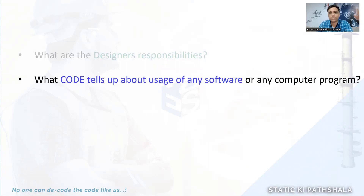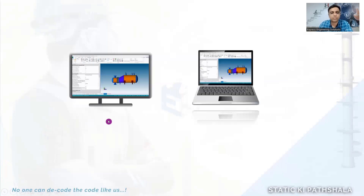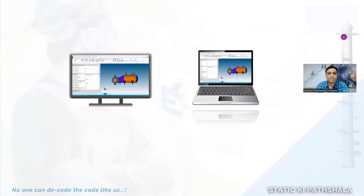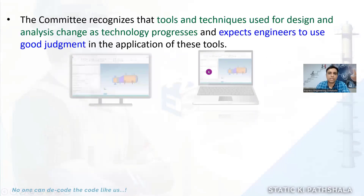In today's 21st century we are using all the gadgets like computers, mobiles, and laptops with high-end applications. Does the code also allow us to use that, or are there any restrictions provided by the code? Most of us are now performing calculations with the help of a variety of softwares and computer programs, which saves a lot of time and is inevitable in today's world of competition.